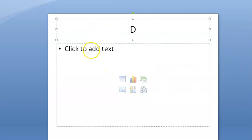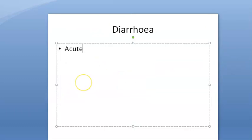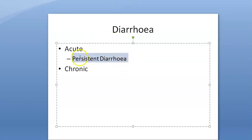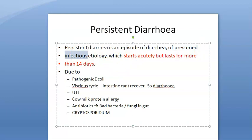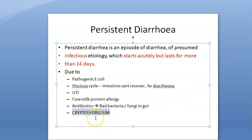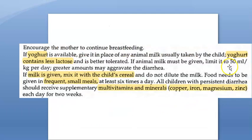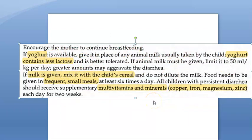Regarding diarrhea duration types: acute diarrhea can become persistent diarrhea, then chronic. Persistent diarrhea is acute diarrhea that continues beyond 14 days, of infectious etiology, starting acutely. Causes include pathogenic E. coli, UTI, cow's milk protein allergy, antibiotic use, and Cryptosporidium. It creates a vicious cycle where the intestine cannot recover. Management includes giving yogurt, which has less lactose, or mixing milk with cereal.